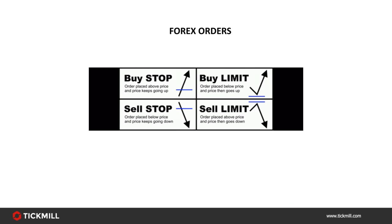Now let's look at the types of orders. The term 'order' refers to how you will enter or exit a trade. There are some basic order types all brokers provide and some more complex ones — be sure to know which your broker accepts. A market order is an order to buy or sell at the best available price, getting you into the market immediately at whatever price is available. Remember: you buy at the ask price and sell at the bid price.